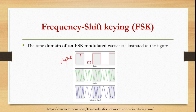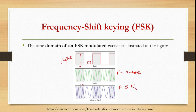The carrier signal has the same frequency throughout. The modulating signal is the FSK signal. You can see that for logic 1 the frequency is shifted — we call it the mark frequency — and for logic 0 the frequency is different — it is called the space frequency.